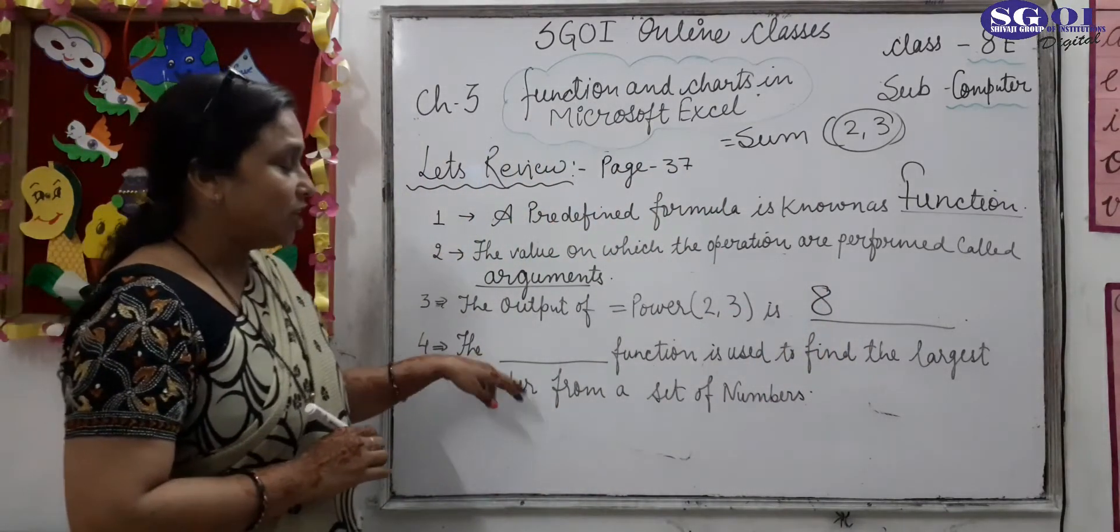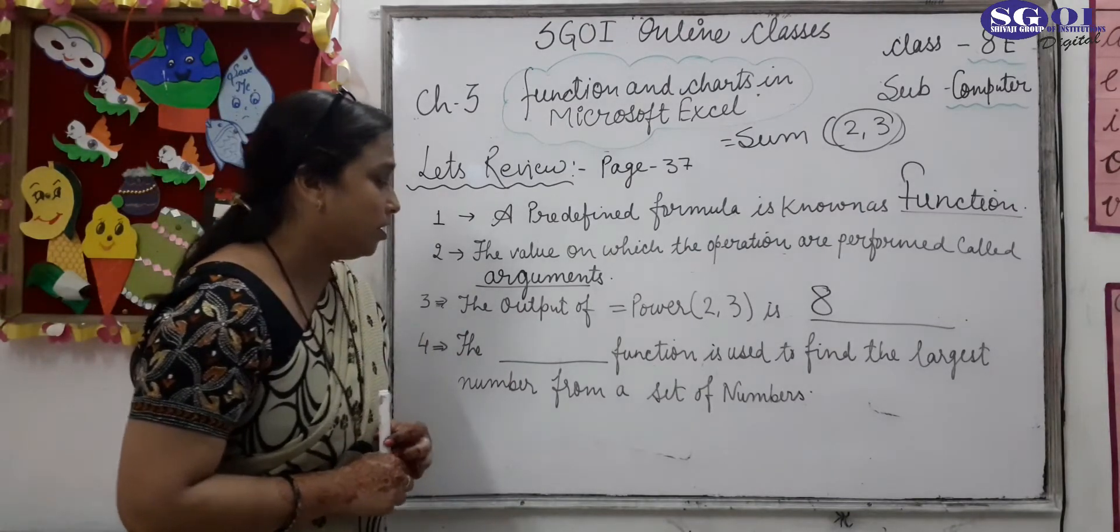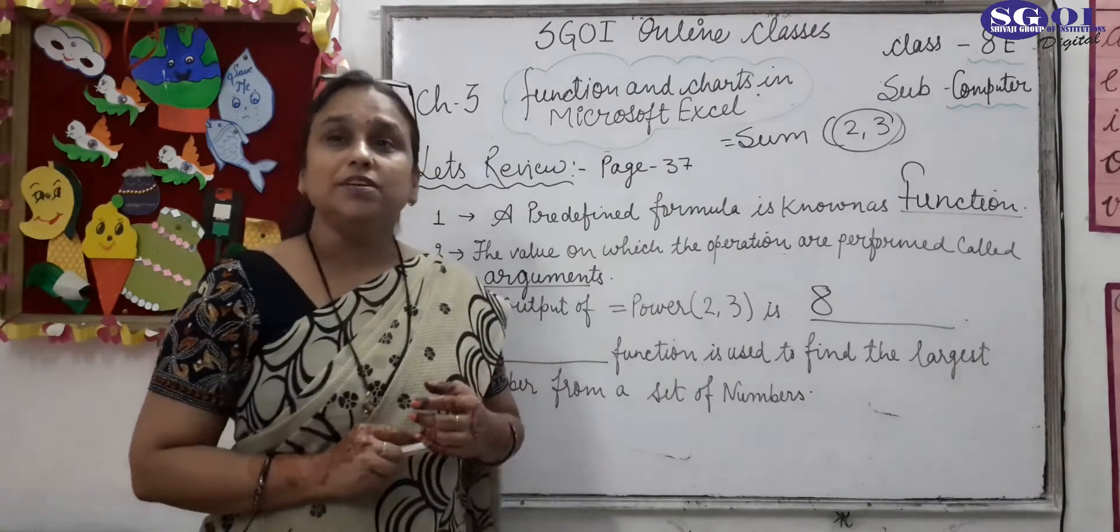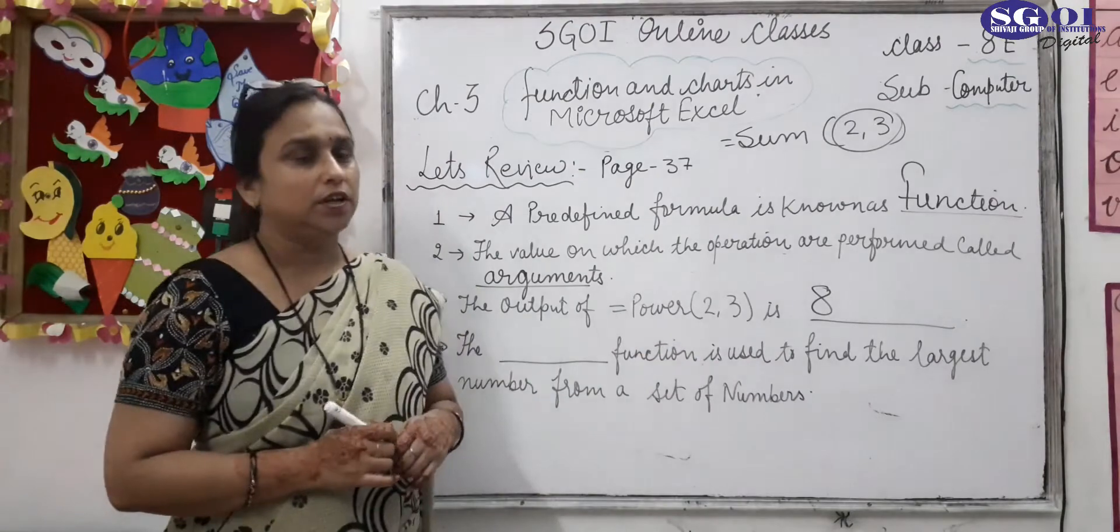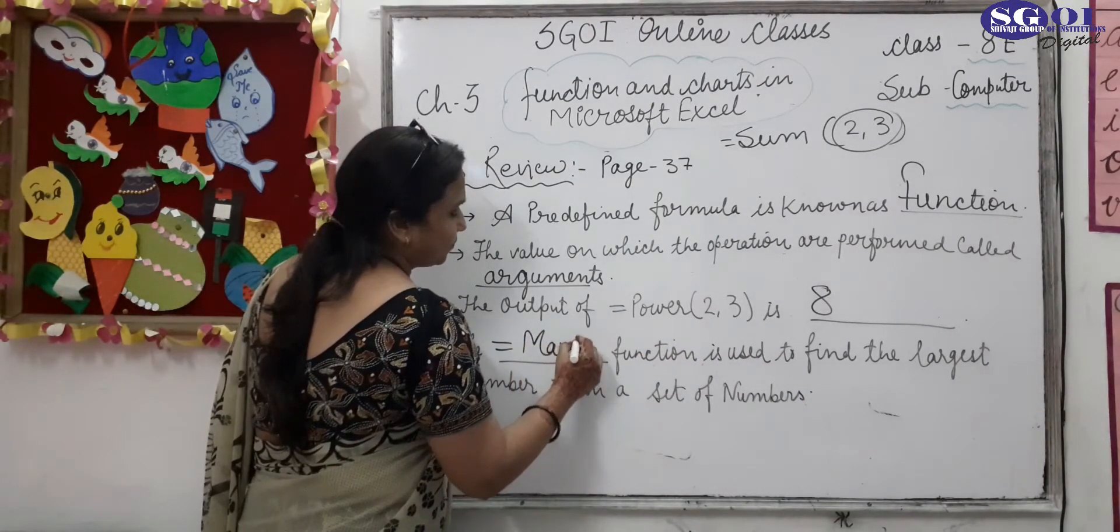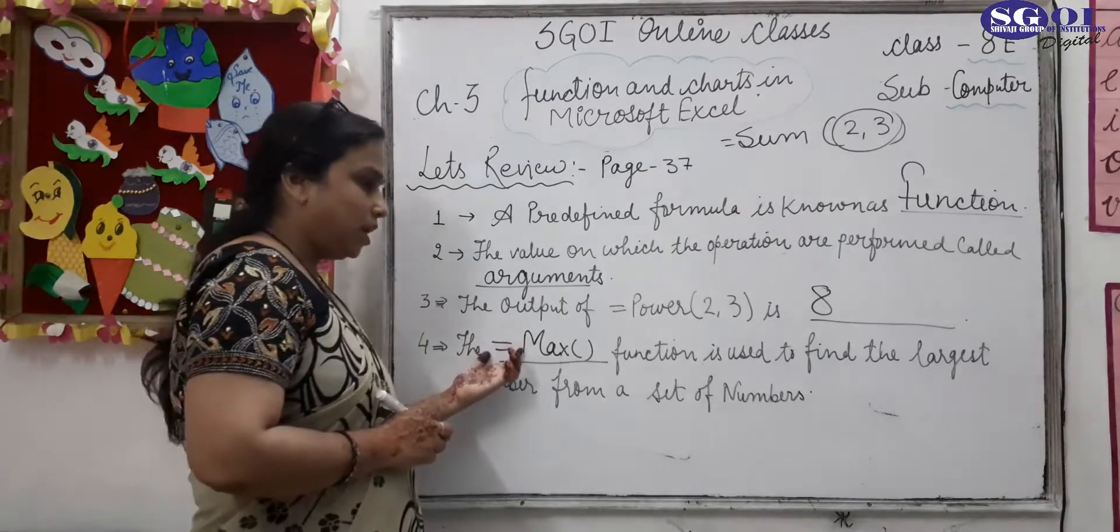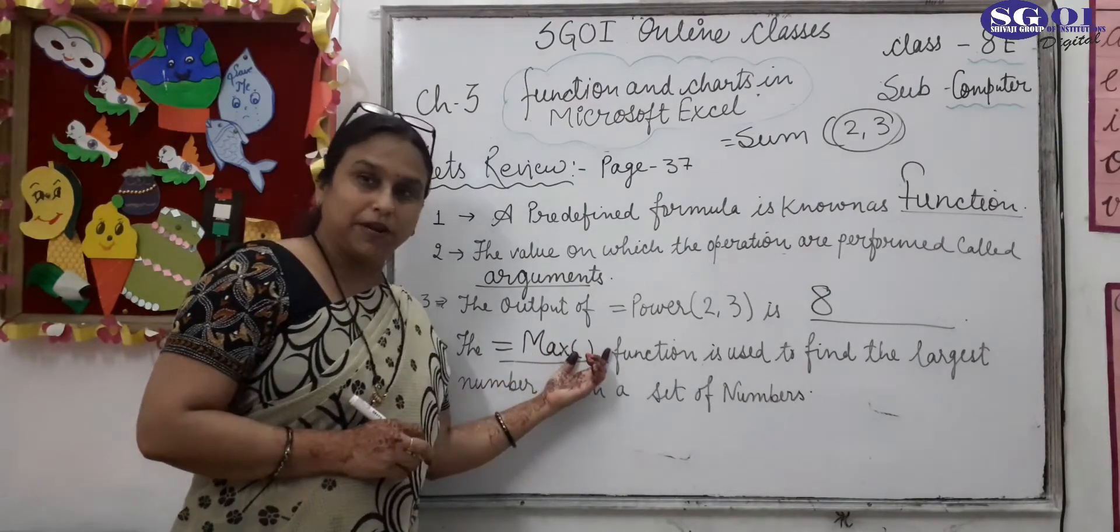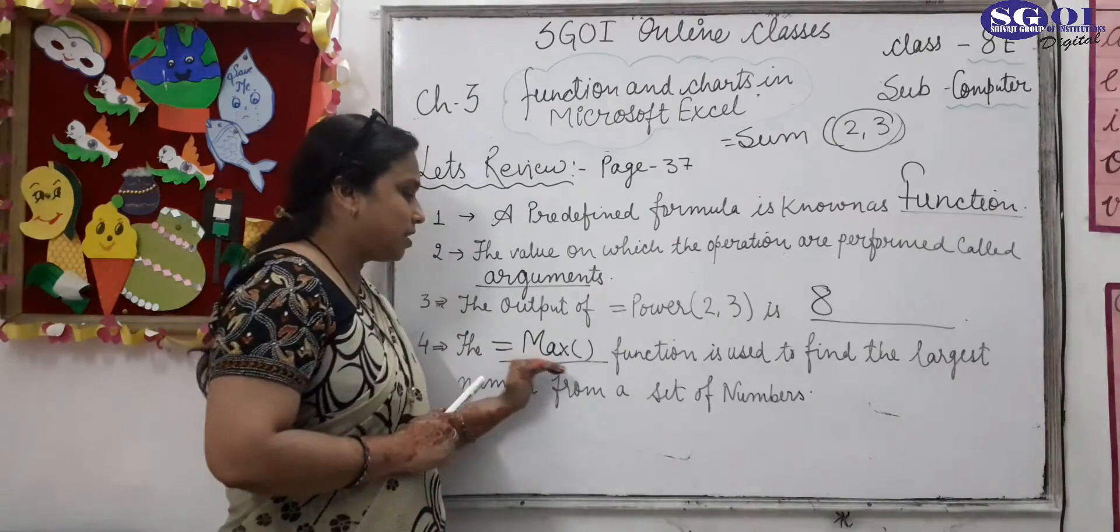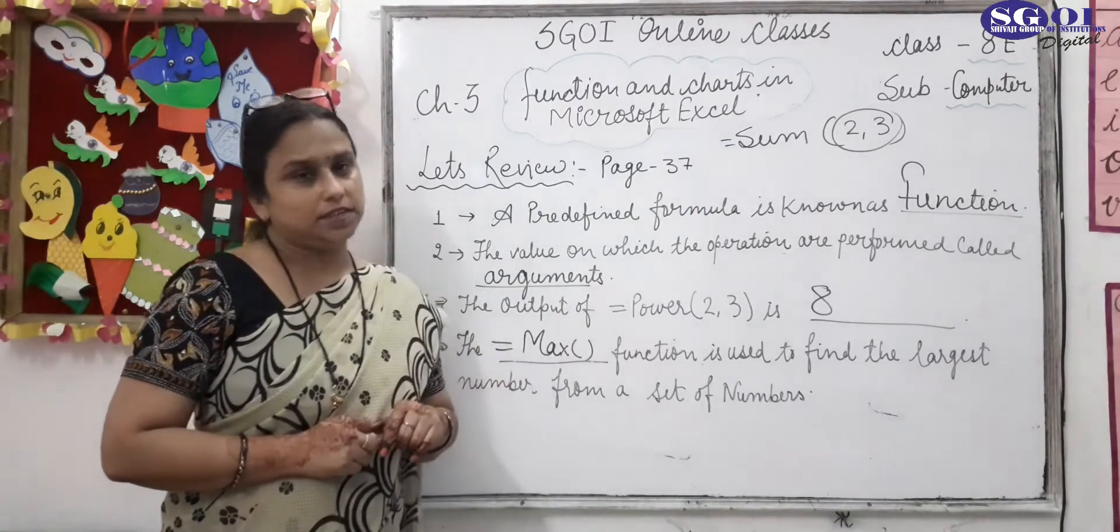Next, the function is used to find the largest number from a set of numbers. So your answer is equal MAX. Okay, whichever function you use with equal sign, with function name and with bracket. Brackets are called parentheses. Clear? So in this way you have to write this function. So complete the let's review.